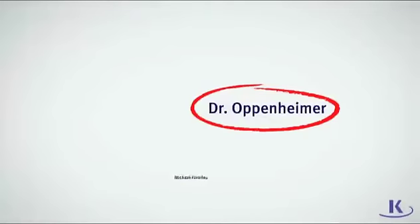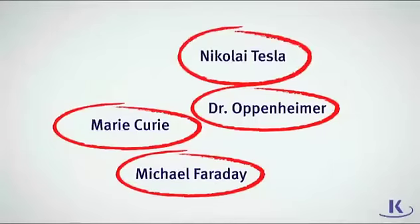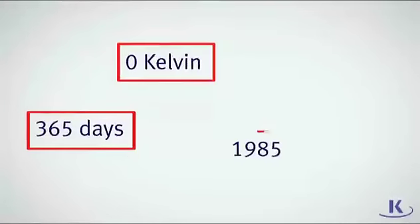Save time and create a strong passage map by marking important information in the passage. By using unique markings for different categories of information, you can easily locate the answer to a question without having to read the entire passage again. For instance, to keep straight who says what, circle people's names as you come across them. If you start to see a lot of numbers, put a box around them so they're easy to locate.